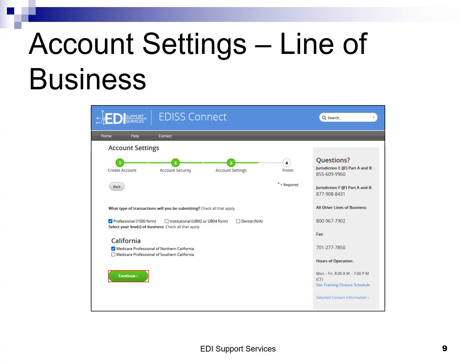Next, check all lines of business — professional, institutional, and/or dental — that apply. Check the state-specific lines of business that apply to your NPI. When all lines of business have been selected, click Continue.